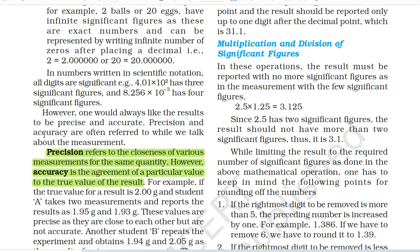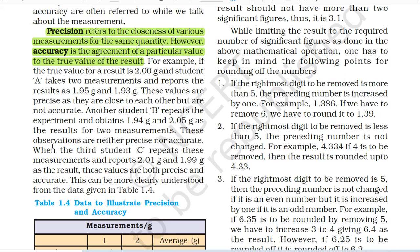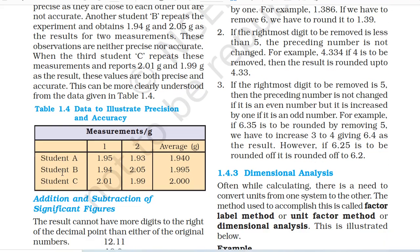However one would always like the results to be precise and accurate. Precision refers to the closeness of various measurements for the same quantity. Accuracy is the agreement of a particular value to the true value of the result. For example, if the true value for a result is 2.00 g and student A takes two measurements and reports the results as 1.95 g and 1.93 g — these values are precise as they are close to each other but are not accurate. Another student B obtains 1.94 g and 2.05 g — these observations are neither precise nor accurate. When student C reports 2.01 g and 1.99 g, these values are both precise and accurate.